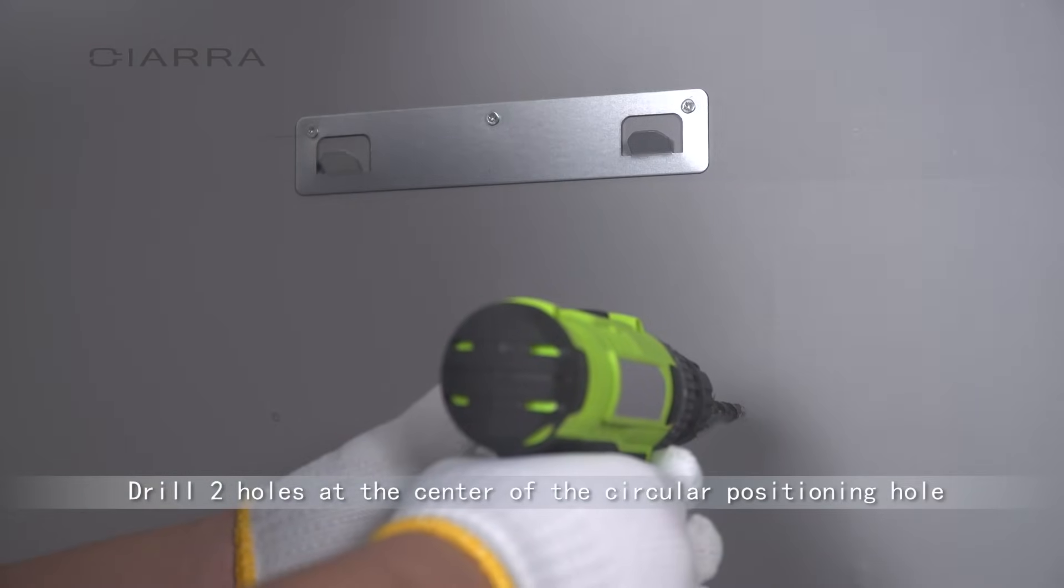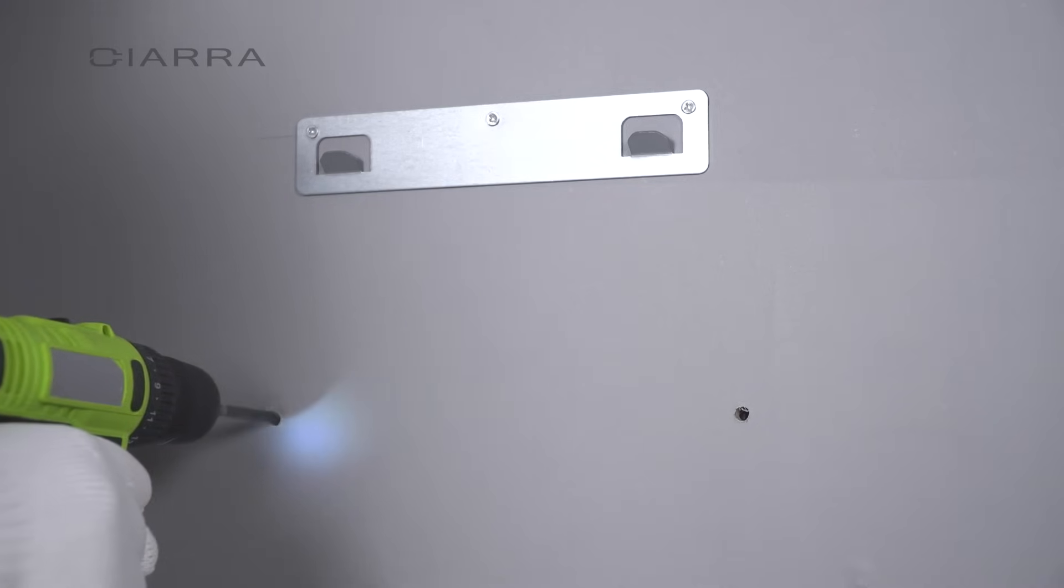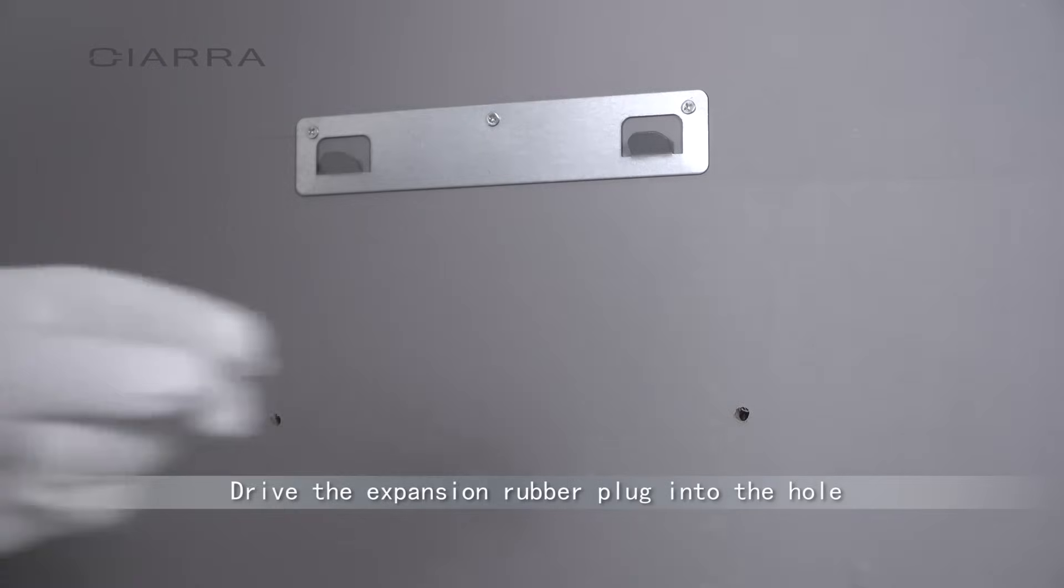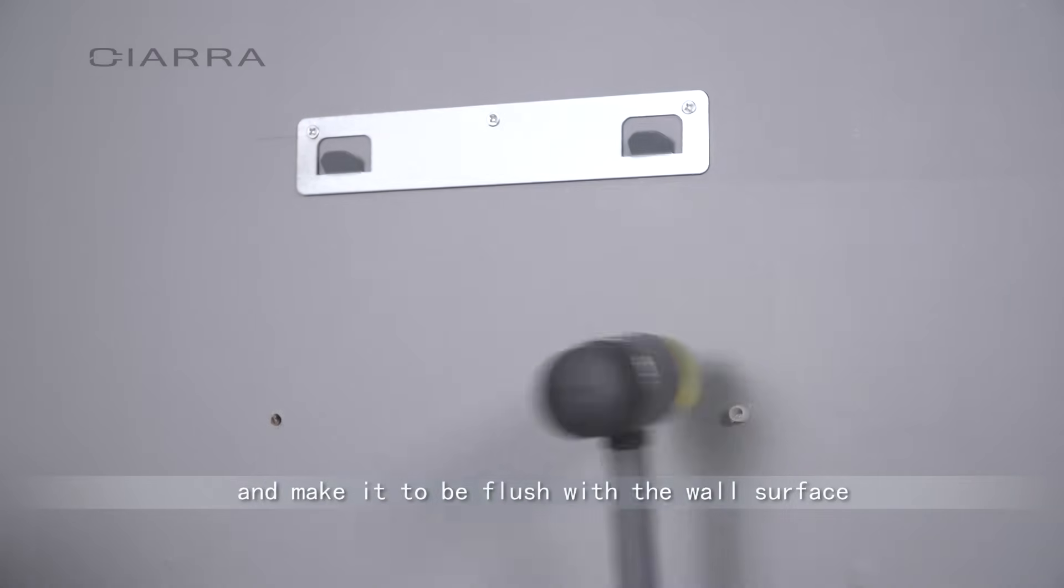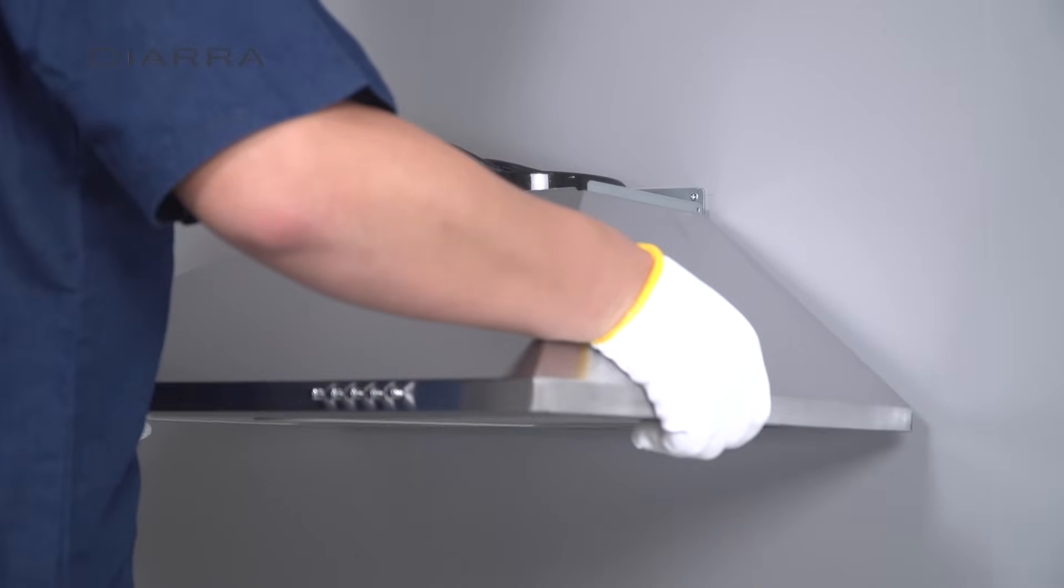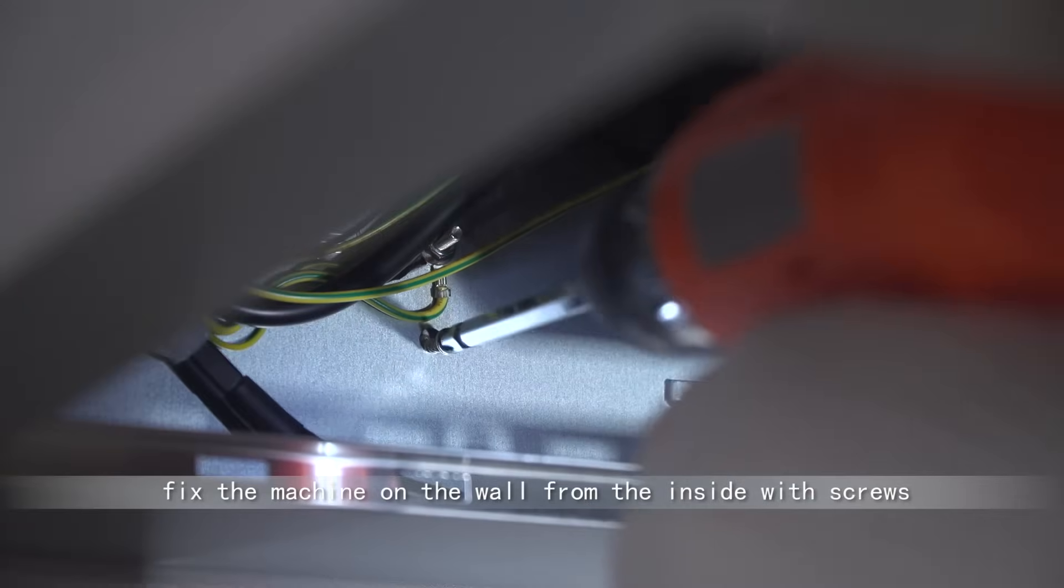Drill two holes at the center of the circular positioning hole. Drive the expansion rubber plug into the hole and make it flush with the wall surface. Hang up the machine again. Fix the machine on the wall from the inside with screws.